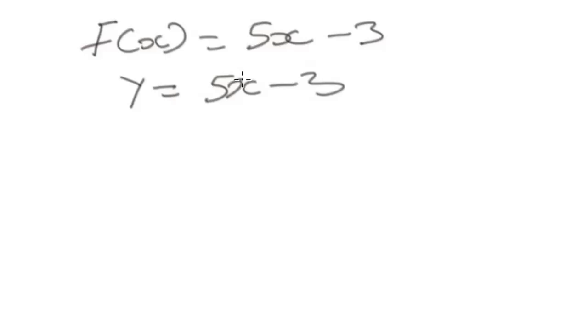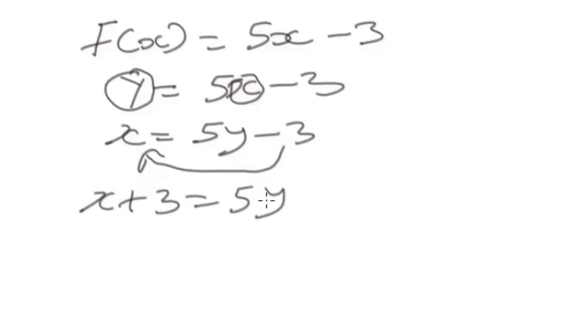Once you have done this, you then switch this x with this y here, so you'll have x = 5y - 3. Now make y the subject of the formula. To do that, move the negative three using inverse operations to get x + 3 = 5y. Then divide both sides by 5 to get the inverse...